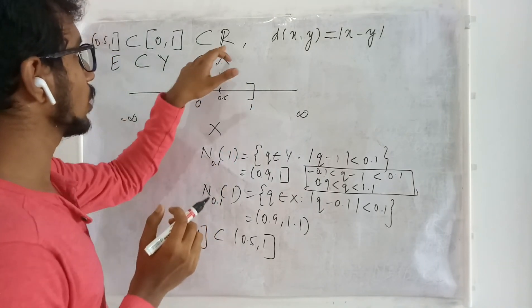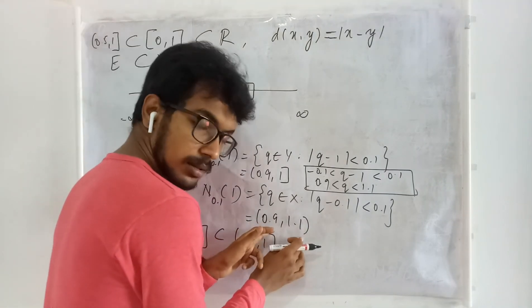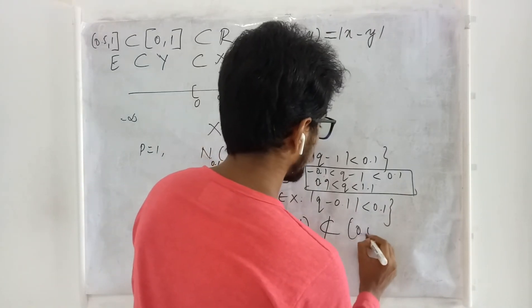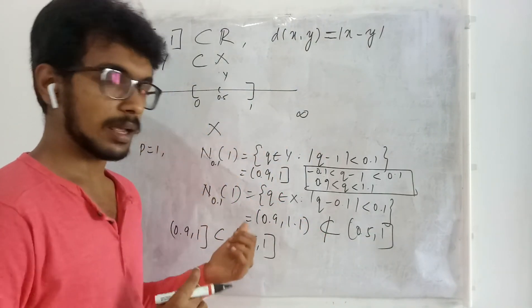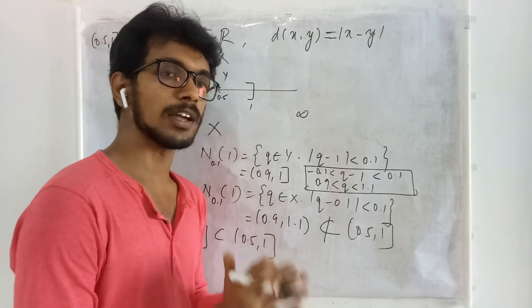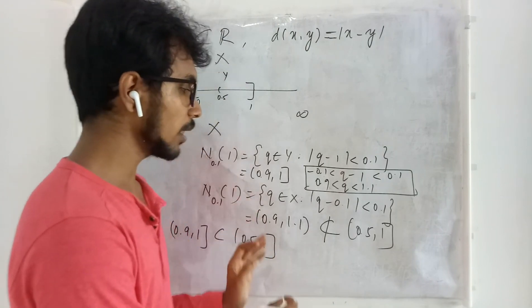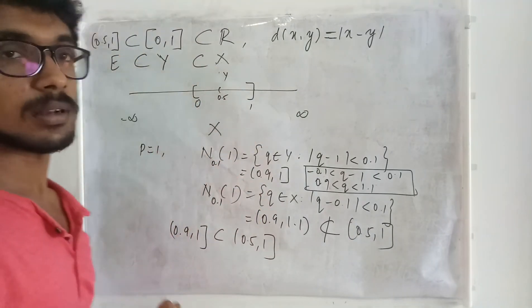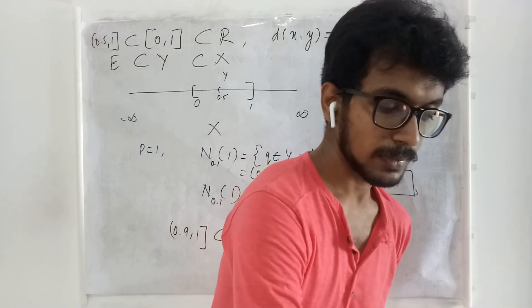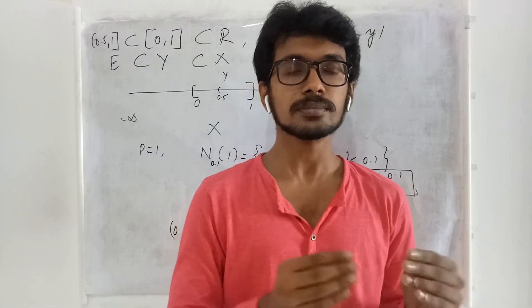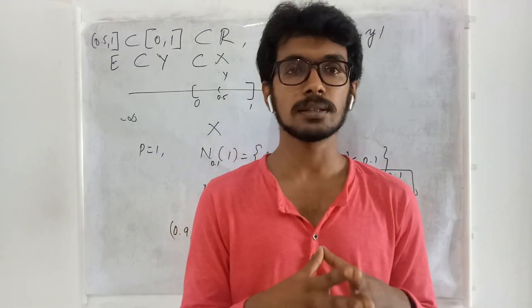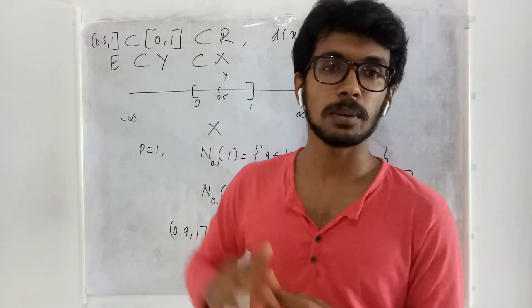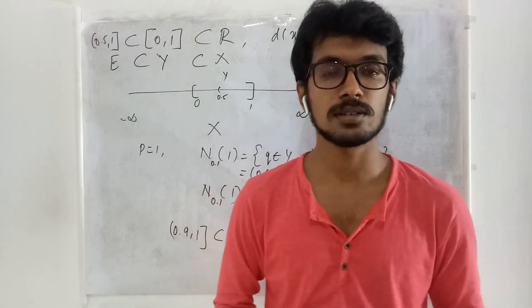Whereas when I look at E as a subset of X, the neighborhood of the point 1 that I get is the interval from 0.9 to 1.1, which is not contained in the interval 0.5 to 1. You may try and reduce the radius, but even then no neighborhood of the point 1 is completely contained in E. Therefore E is not open in X. We have worked out many examples of neighborhoods in our course. Let us explore neighborhoods in sub-metric spaces in upcoming lectures. If you have any queries, post them in the comment section. Thank you for watching.